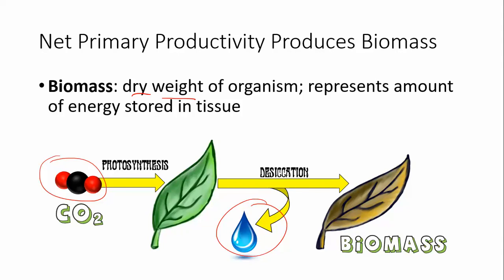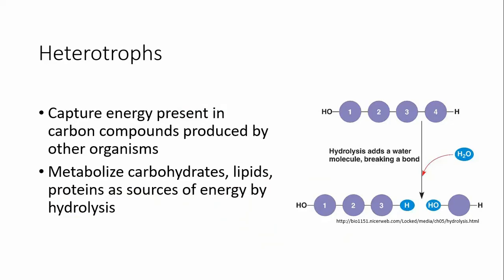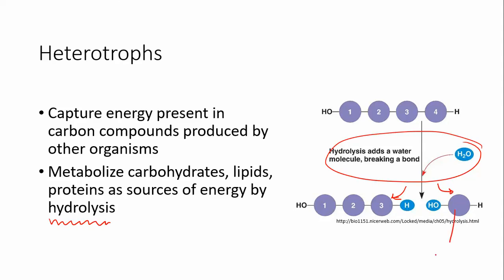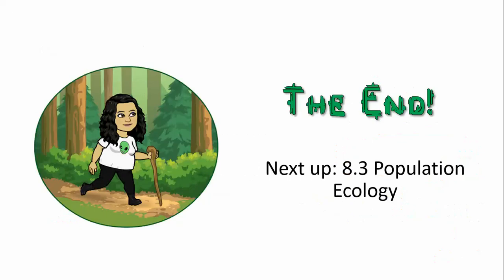Heterotrophs eat other organisms, taking in carbon compounds by consuming parts of other organisms and metabolizing them — breaking them down into monomers for their own purposes. They perform hydrolysis: adding a water molecule to break more complex biomolecules into smaller ones, breaking polymers into individual monomers. That's the end of this lesson — next up is population ecology, so make sure you know where your calculator is because there's a little bit of math.